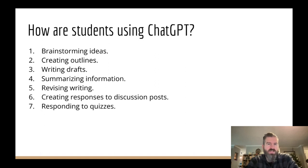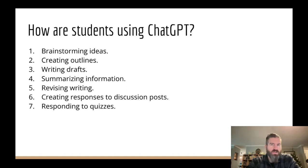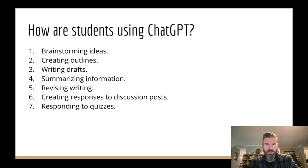Maybe in the interest of time I'll just go through a couple of these, because some of them seem innocuous — some of them don't seem that bad. But if we look at just brainstorming ideas, which may seem relatively harmless, my concern as an instructor is that using AI to brainstorm ideas takes away an opportunity to practice critical thinking skills. If you have an assignment and I say I want you to choose a topic — which is something we'll be doing in English 102 — and you use AI to brainstorm research topics, you're not doing the brainstorming yourself, and you probably aren't going to be as connected to that topic.